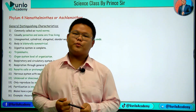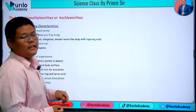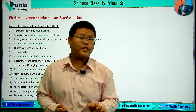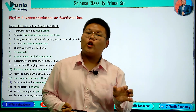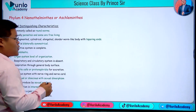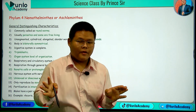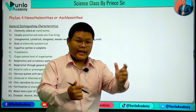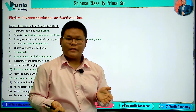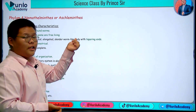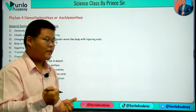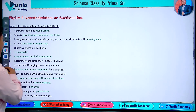Welcome back everyone to Vril Academy. We are going to learn about Phylum 4, named Helminthes or Aschelminthes. The suffix 'helminth' is always related to worm-like organisms. These have a round shape, not a flat shape. In the previous lecture we discussed Platyhelminthes, which were flat and ventrally flattened like a leaf. Aschelminthes are called roundworms because of their round structure.